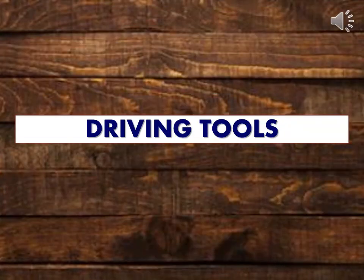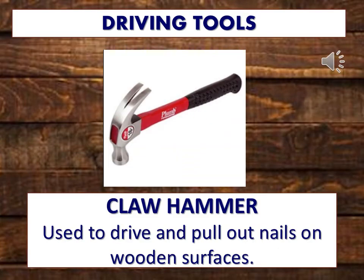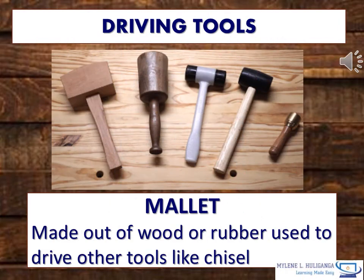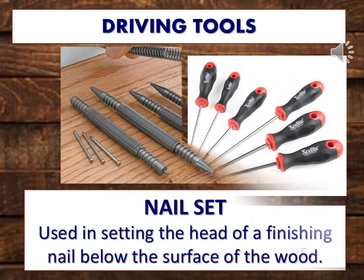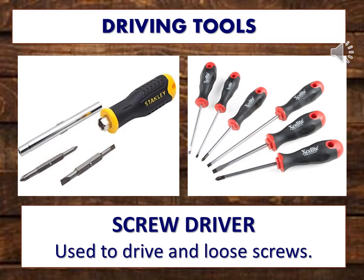And lastly, the driving tools. Claw hammer: used to drive and pull out nails on wooden surfaces. Mallet: made out of wood or rubber, used to drive other tools like chisels. Nail set: used in setting the head of finishing nails below the surface of the wood. Screwdriver: used to drive and loosen screws.